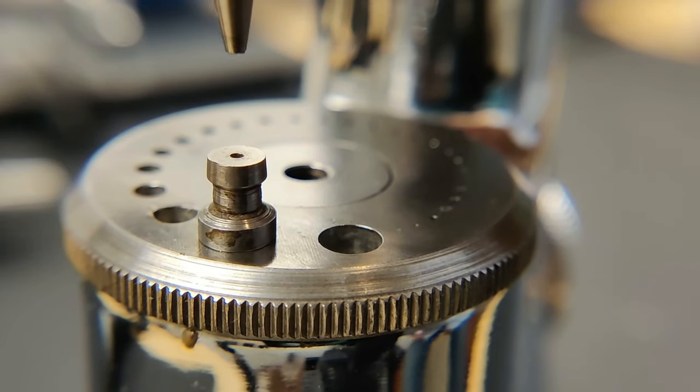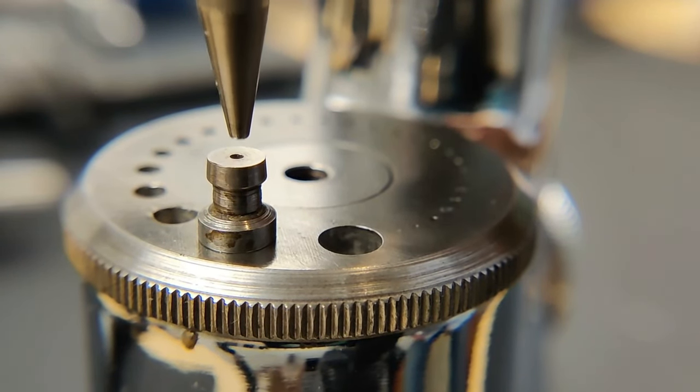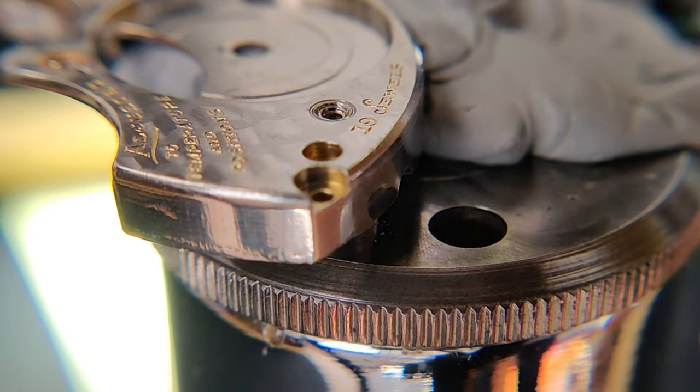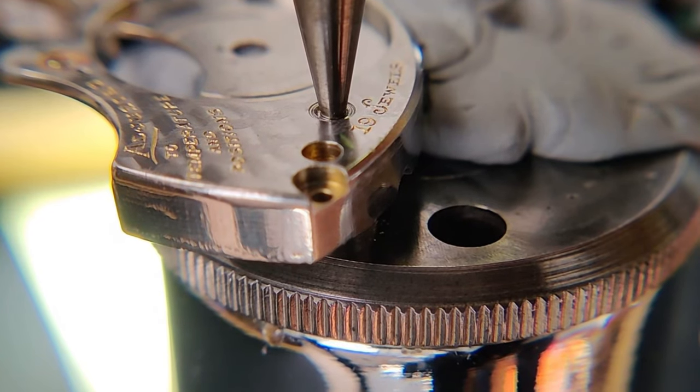And I believe this winding bridge is analogous to a typical crown wheel. Time to close the bushing. We'll use this dome punch and a flat stump. By positioning the barrel bridge between the two, we'll deliver a series of firm taps to the punch.